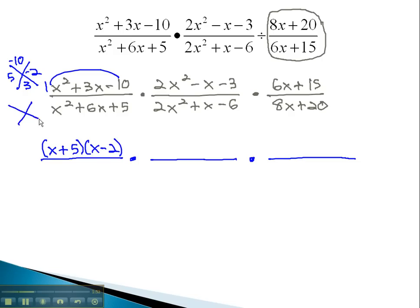In the denominator, we multiply also using the ac method, multiplying to 5 and adding to 6. We see this is done with 1 and 5. Because of the 1 in front of x squared, we have x plus 1 times x plus 5.